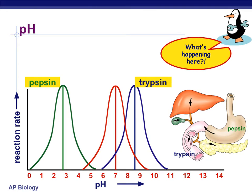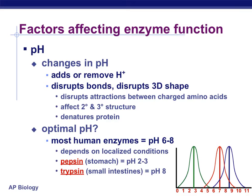pH is another factor that can affect enzyme efficiency. Different enzymes are going to work at a different optimum pH. Much like temperature, changes in pH can disrupt the bonds and disrupt the overall shape of the enzyme. Changing the pH adds or removes hydrogen ions. If you adjust this too much outside the optimal pH, the activity or rate at which enzymes are functioning can be disrupted. A pH outside the normal functioning range will affect the shape of the enzyme and therefore its ability to bind with a substrate.